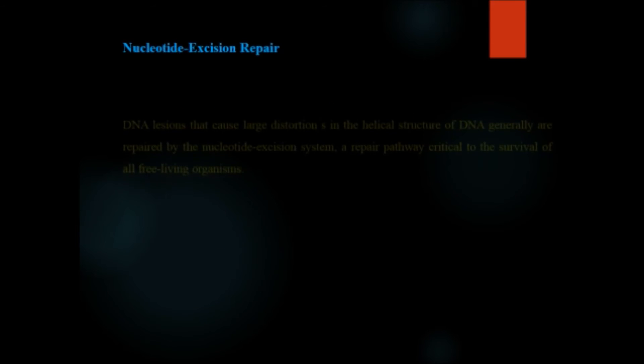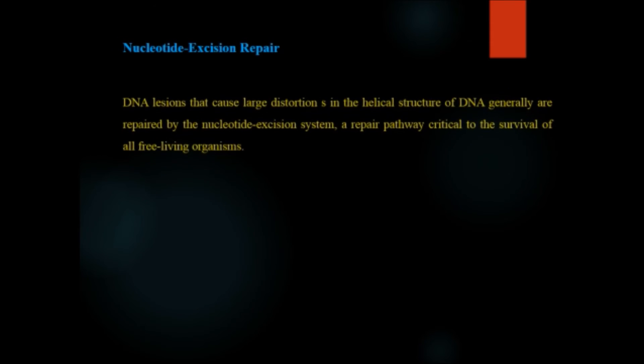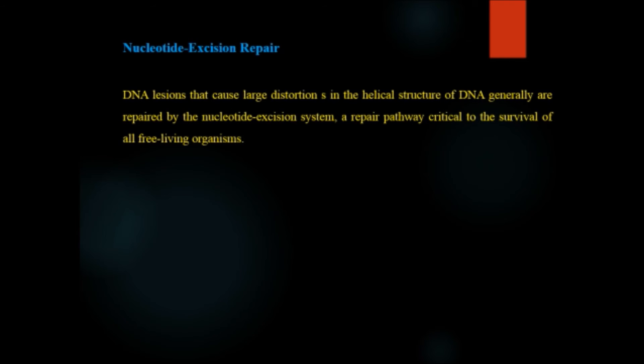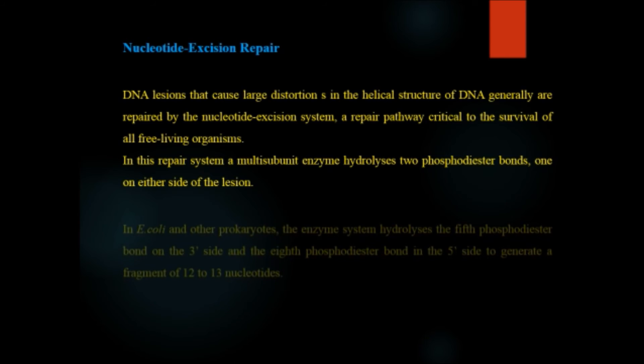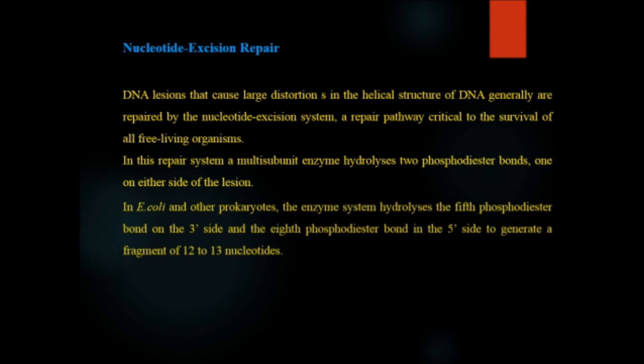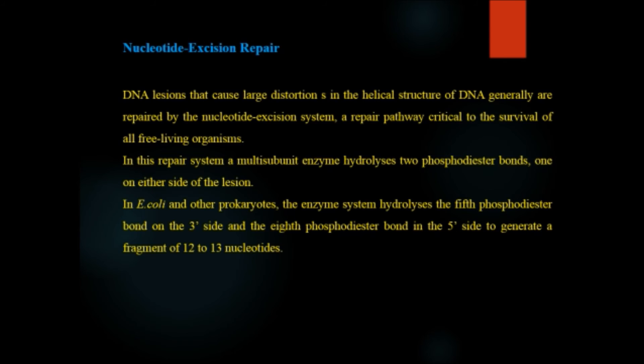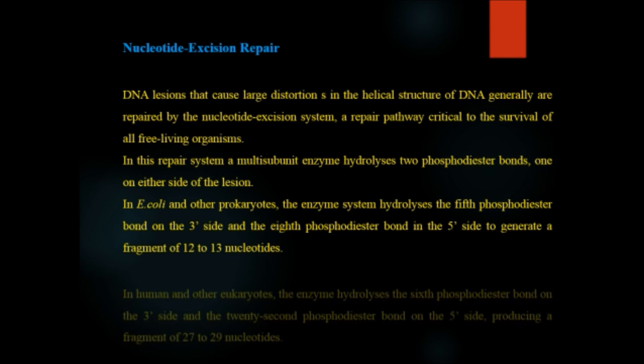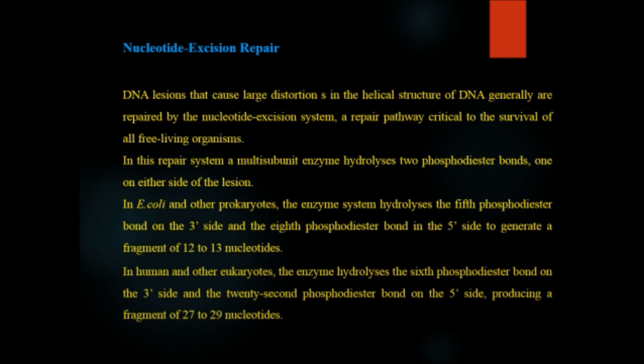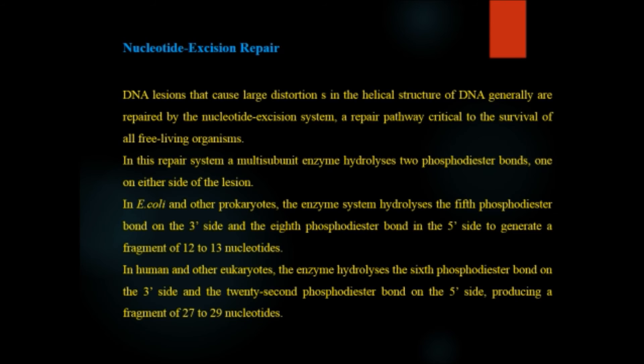Nucleotide excision repair. DNA lesions that cause large distortions in the helical structure of DNA generally are repaired by the nucleotide excision system, a repair pathway critical to the survival of all free-living organisms. In this repair system, a multi-subunit enzyme hydrolyzes two phosphodiester bonds, one on either side of the lesion. In E. coli and other prokaryotes, the enzyme system hydrolyzes the 5th phosphodiester bond on the 3' side and the 8th phosphodiester bond on the 5' side to generate a fragment of 12 to 13 nucleotides. In humans and other eukaryotes, the enzyme hydrolyzes the 6th phosphodiester bond on the 3' side and the 22nd phosphodiester bond on the 5' side, producing a fragment of 27 to 29 nucleotides.